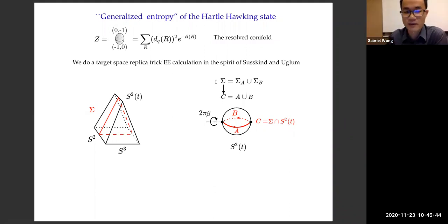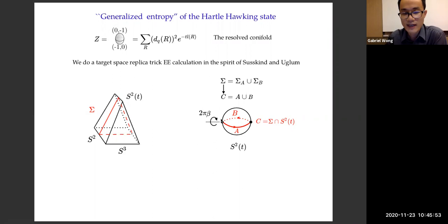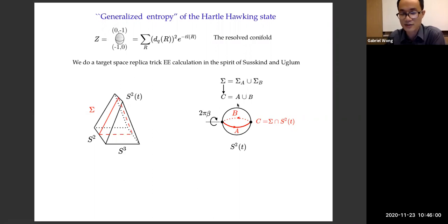Now we can define the generalized entropy. We start with the A-model resolved conifold partition function and just do a target-space replica trick. We give a codimension-one slice like sigma that cuts through the sphere along the equator. We cut the equator into two halves, A and B — what this really means is cutting sigma into two parts that project down to A and B. We do a normal replica trick and let the angle around the entangling surface be 2 pi beta.